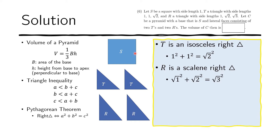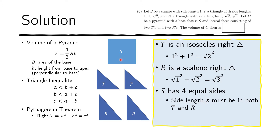Now we want to construct the pyramid. Because it is a square base it has four equal sides, so the side length of S must appear in both T and R. One of the sides of T and one of the sides of R should become the side of the square base. Two sides of the square will be bounded by T and two by R, so there must be some length in T and some length in R that are equal to the side of S.